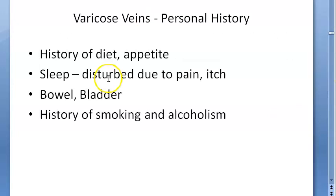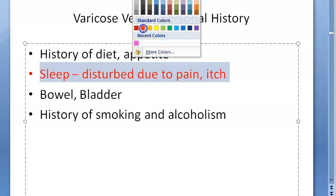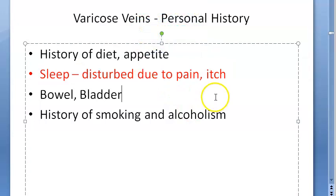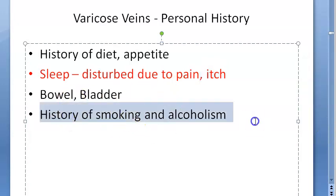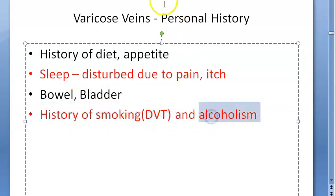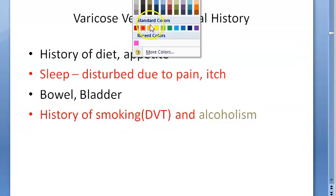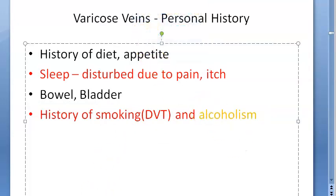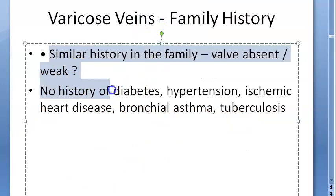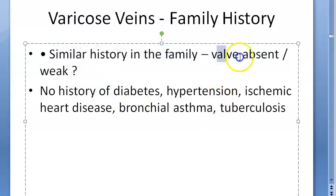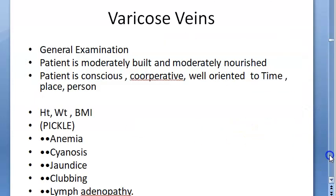In personal history, the patient's sleep may be disturbed due to pain — they may need to elevate the leg. Itching can occur due to venous stasis eczema, and haemosiderin deposits can cause hyperpigmentation. Smoking can lead to DVT. For family history, ask about similar conditions, as valves can be absent or weak as a familial condition.